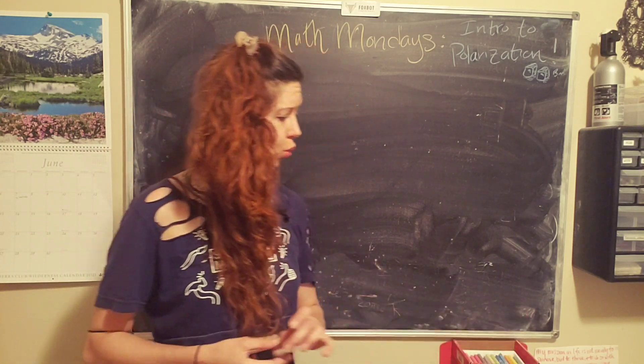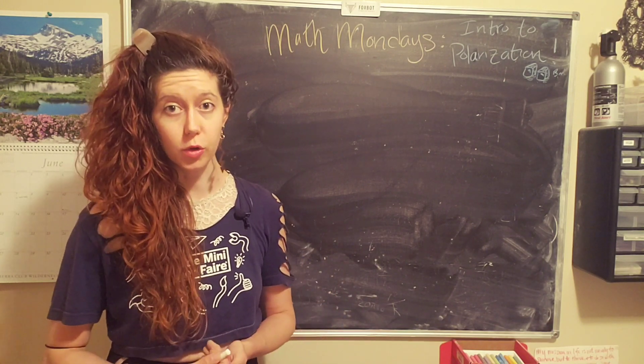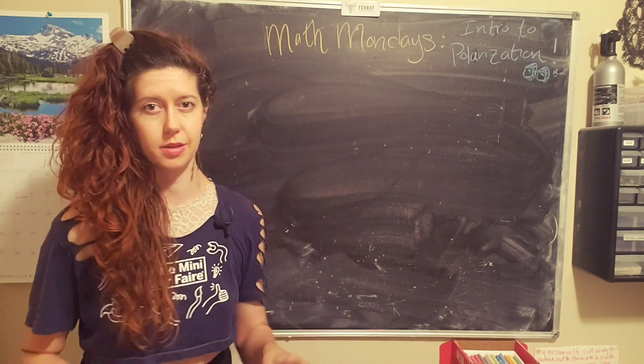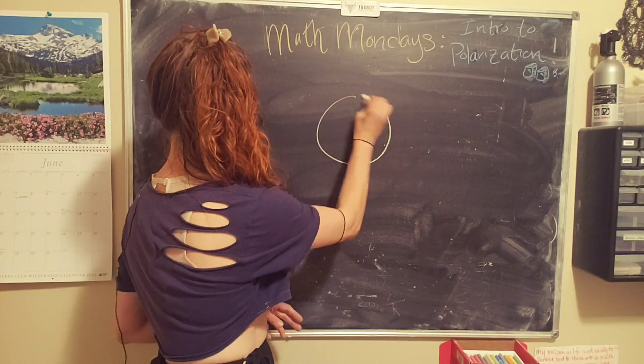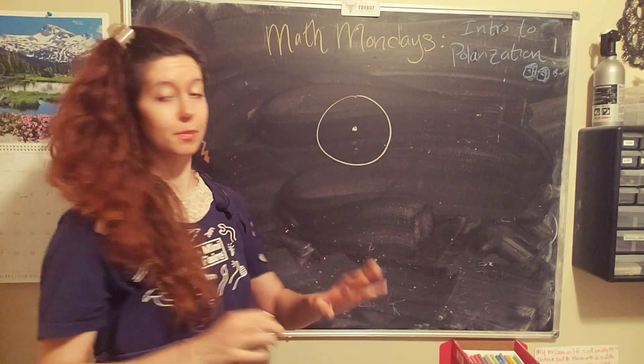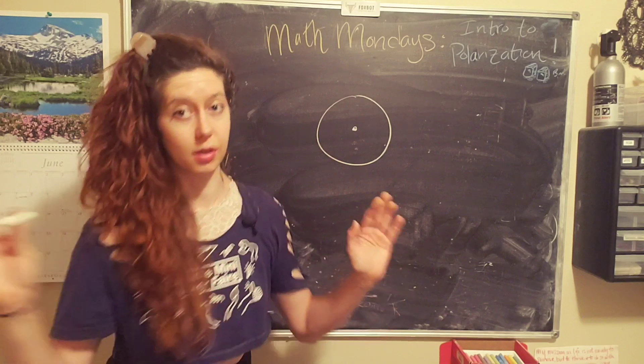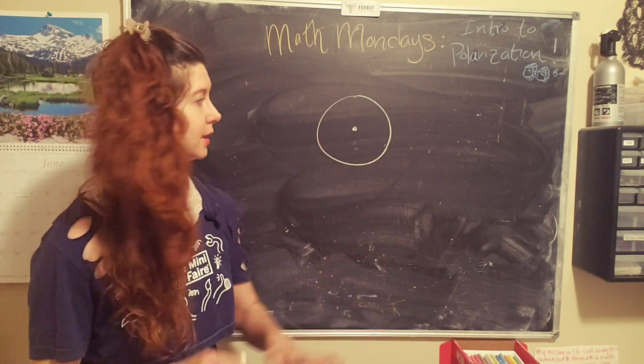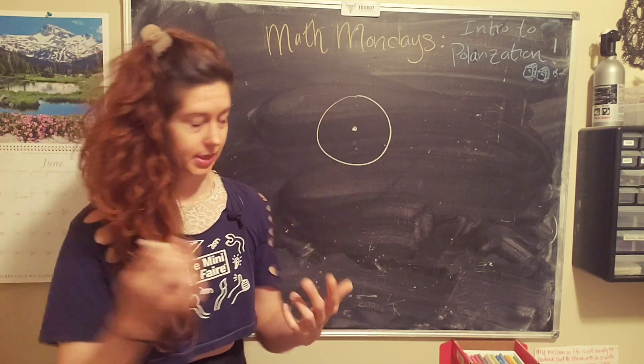However, we can apply an external electric field, which can do two things to the atom. So if you have, I'm going to use the Bohr model of the atom. Remember, we have an electron cloud. It's not actually an orbit, but we're simplifying it for understanding purposes.